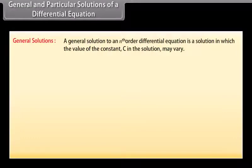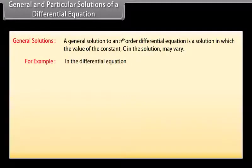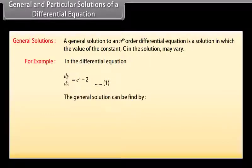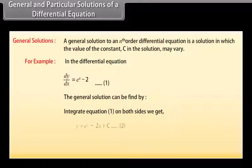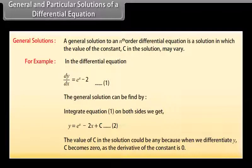General solutions: A general solution to an nth order differential equation is a solution in which the value of the constant c may vary. For example, given dy/dx = eˣ − 2 (equation 1), integrating both sides gives y = eˣ − 2x + c (equation 2). The value of c can be any constant because when we differentiate, c becomes 0 as the derivative of a constant is 0.